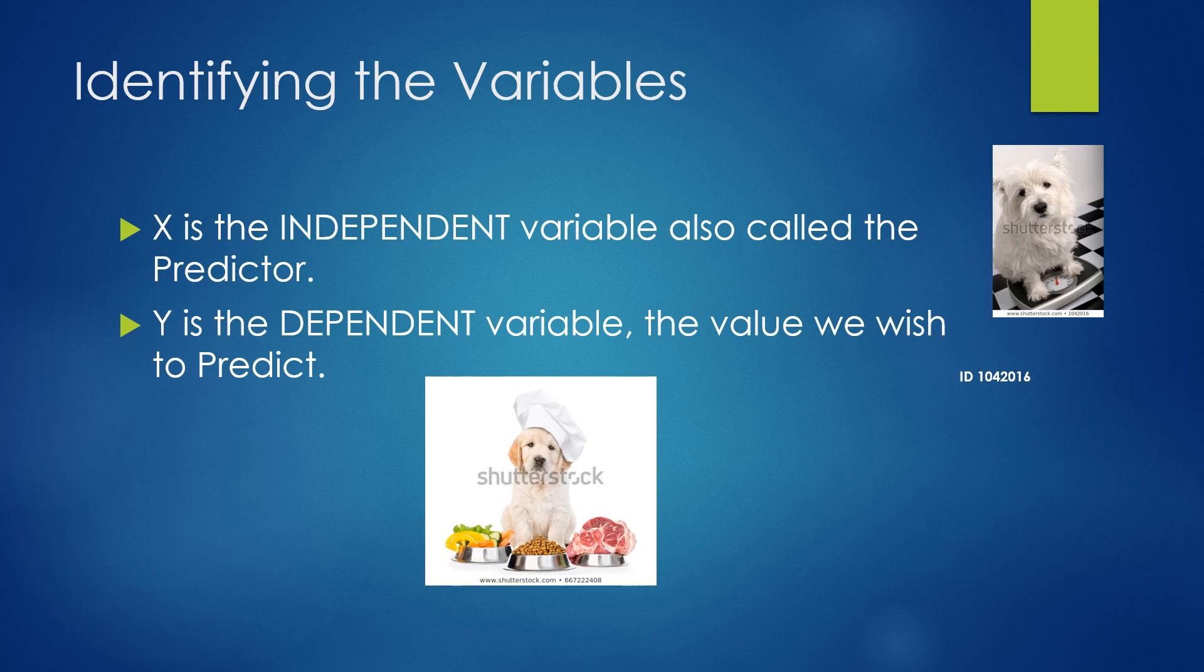When we identify the variables, x is the independent variable, also called the predictor. y is the dependent variable value that we want to predict.